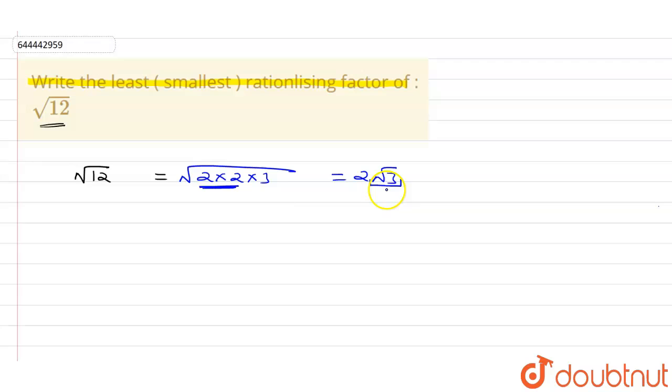So from here I can say that the smallest or least rationalizing factor is root 3 of root 12. So our answer is root 3. So thank you.